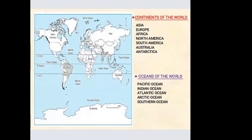We also studied about the continents of the world: Asia, Europe, Africa, North America, South America, Australia, and Antarctica — these are the seven continents. We also studied the oceans of the world: the Pacific Ocean, Indian Ocean, Atlantic Ocean, Arctic Ocean, and Southern Ocean.